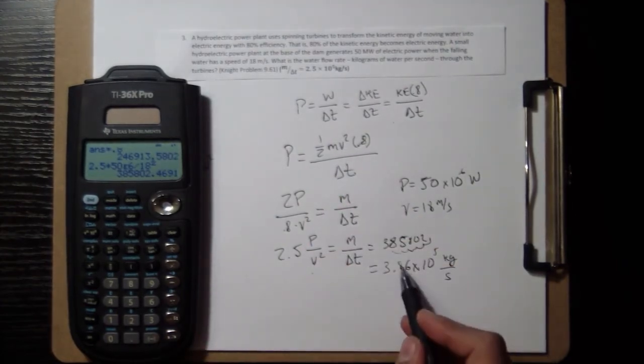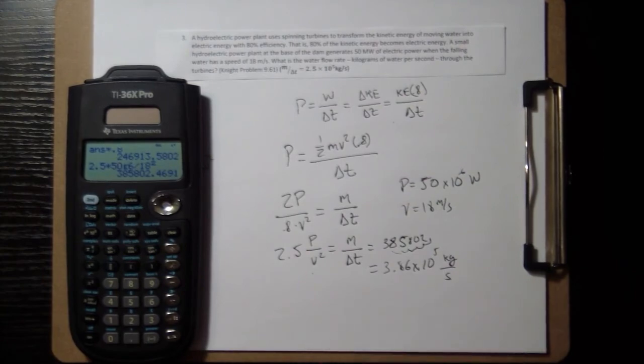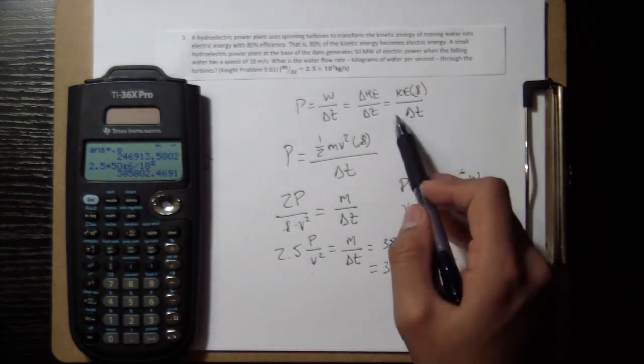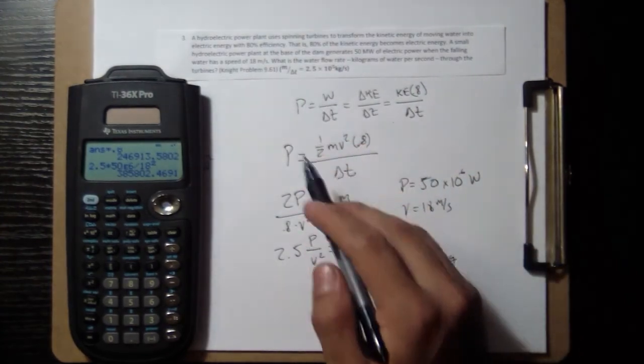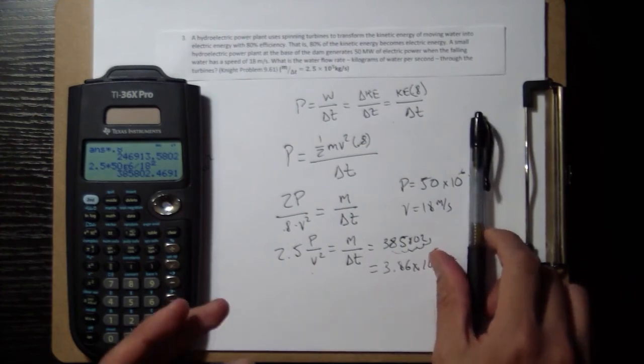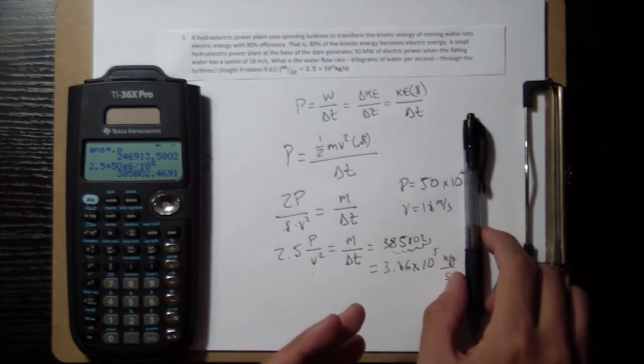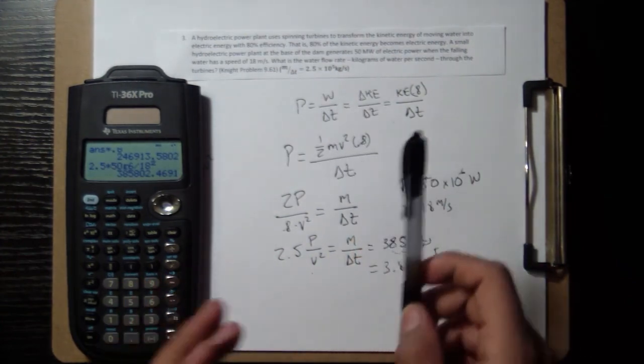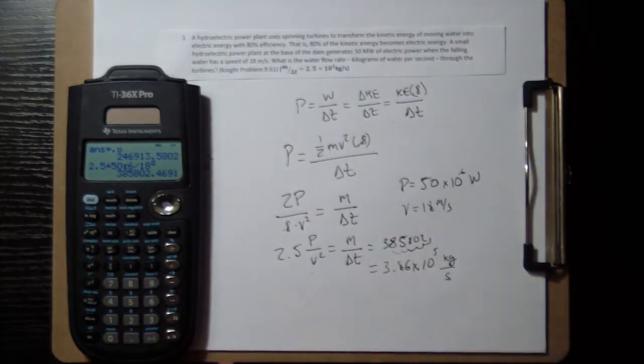But it makes sense that if you lose efficiency, then you're going to need more water to flow through to get the same value. So the higher number even makes more sense if you're just confused about do I multiply or divide. Well, if you were to put the 0.8 on the bottom, you're going to get a smaller number, which means that you can get the same amount of energy but with less water. That doesn't make sense for accounting for a loss of efficiency. Anyway, that's it for this problem.